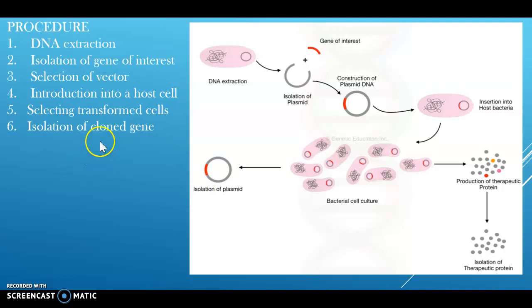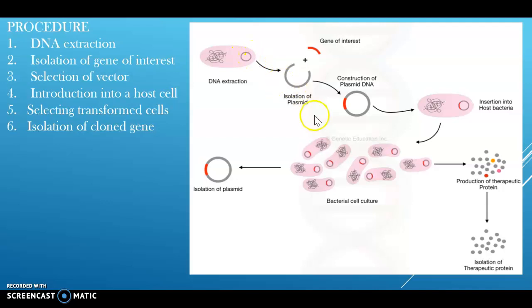Any genetic material starts with extracting the DNA. We have to isolate the DNA from the cell, and different methods are available for this DNA extraction: the enzymatic method, phenol-chloroform DNA extraction, cesium chloride extraction, CTAB DNA extraction method, and magnetic bead-based DNA extraction method. After the extraction, the total genomic DNA is isolated using any of these DNA extraction processes.